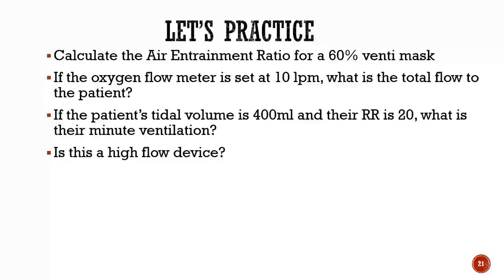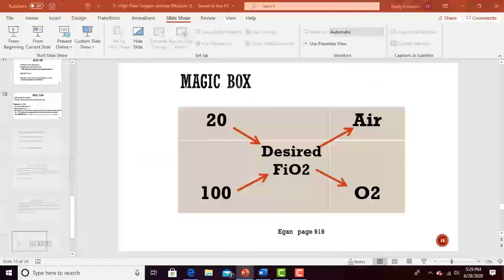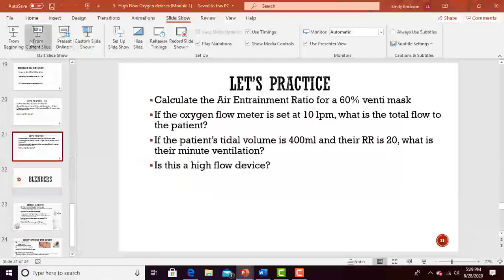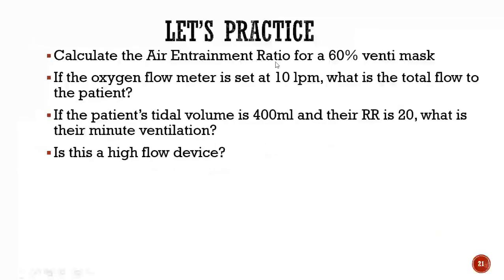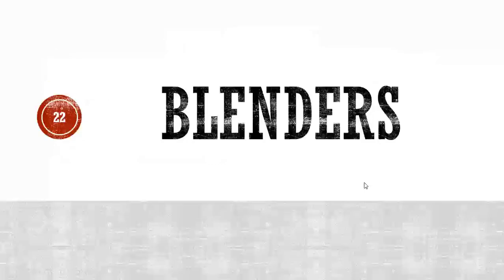For calculating the air entrainment ratio for a 60% venti mask, you'd use the magic box again. A key will be posted walking through that step by step, since this would normally be done on the board in class.